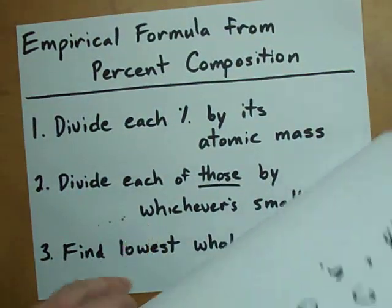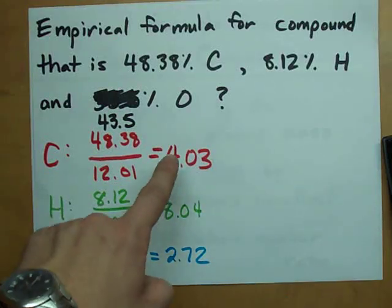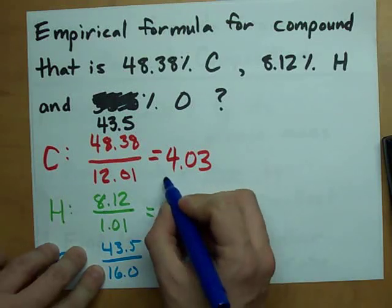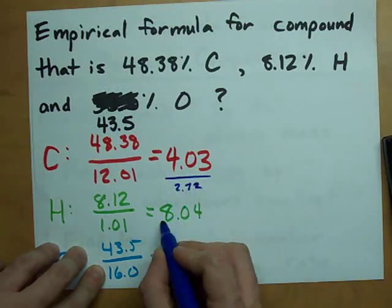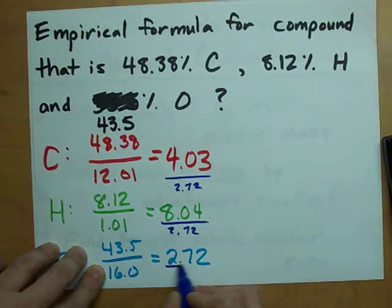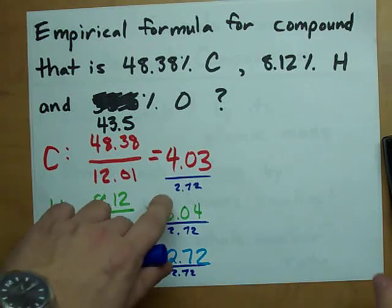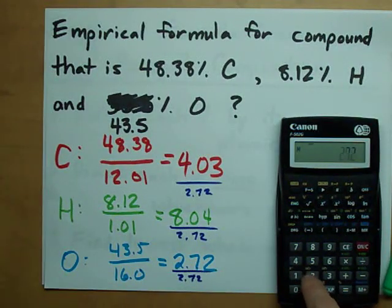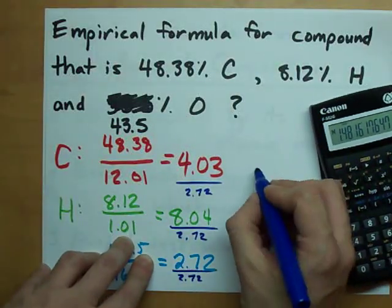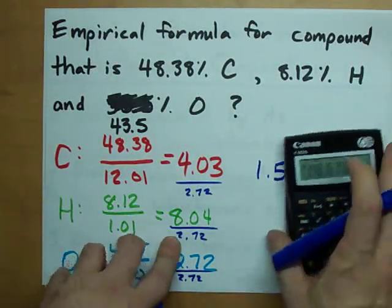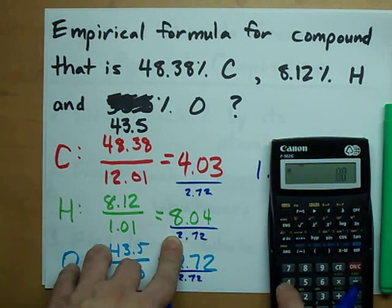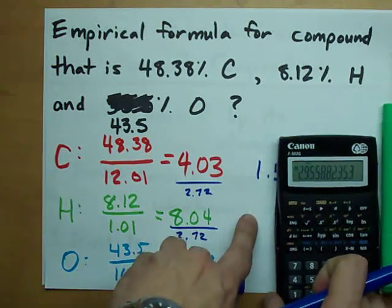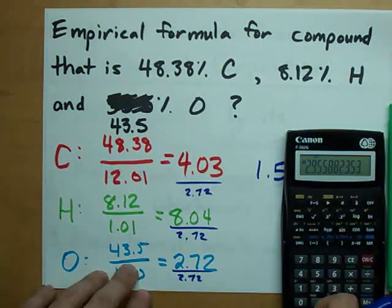Divide each of those answers by whichever is smallest, 2.72. This one's smallest. So what I'm going to do is divide every single one of these by 2.72. Here we go, 4.03 divided by 2.72, I've got 1.5 of these. 8.04 divided by 2.72 gives me 2.96.